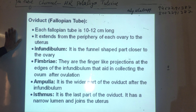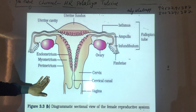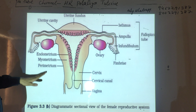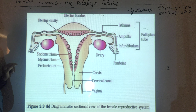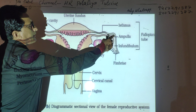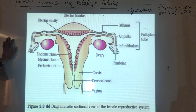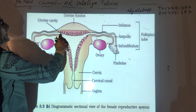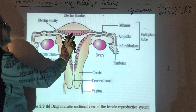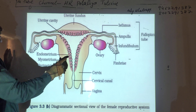In case of the fallopian tube, looking at the diagram — both ovaries are present. From the ovary, the tubular structure extending to the uterus is the fallopian tube. The fallopian tube opens into the bag-like structure, which is the uterus. The uterus opens into the cervix via the cervical canal, and then into the vagina.